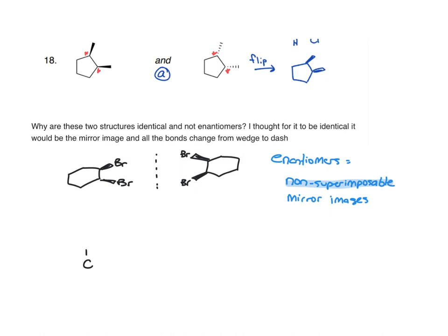We can draw methane. We can draw its mirror image. But these certainly aren't enantiomers. Just because something is a mirror image doesn't mean it's the enantiomer. The two methane molecules are identical structures.